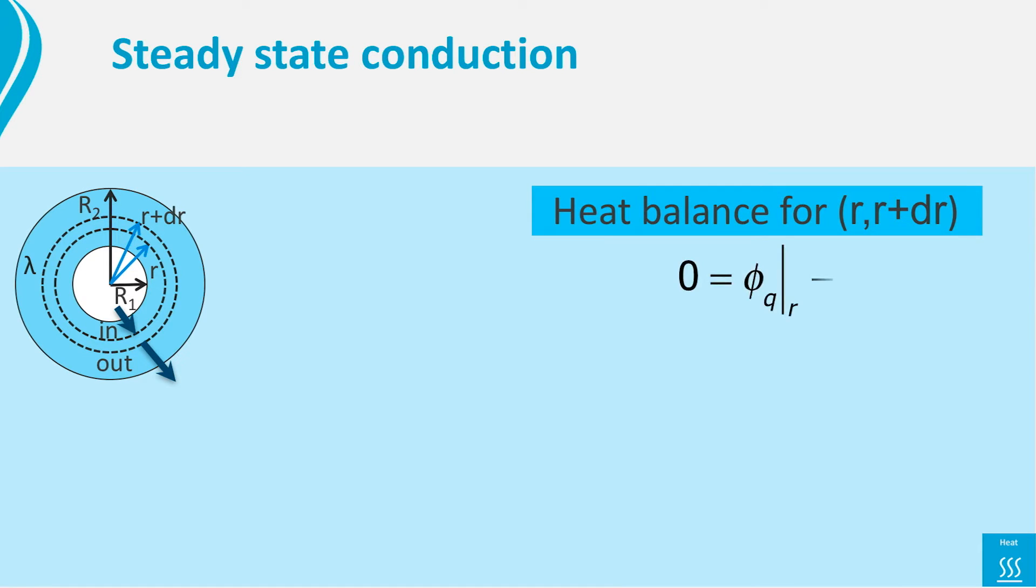As the heat transport is via conduction, also here Fourier's law applies. Now we have to write it in cylindrical coordinates. It is phi_q is minus lambda times A times dT/dr. This looks pretty much like we had before, but don't be fooled. There is a catch here. The area A is not the same for the inner dashed ring as for the outer dashed ring. The area A is 2πr times l, with l the length of the cylinder, and A is thus a function of r.